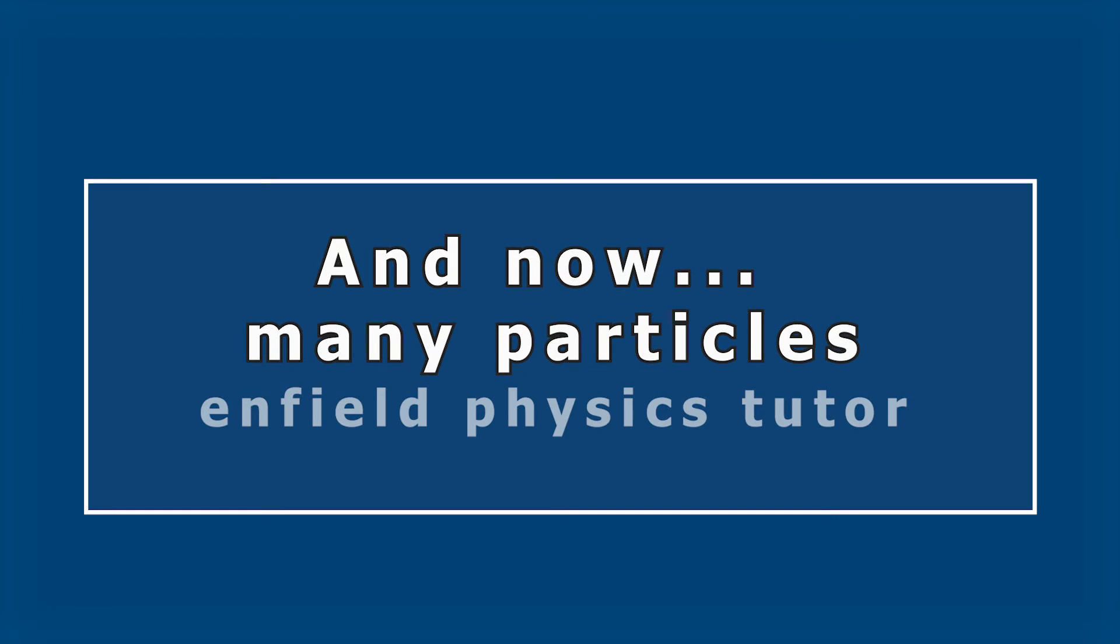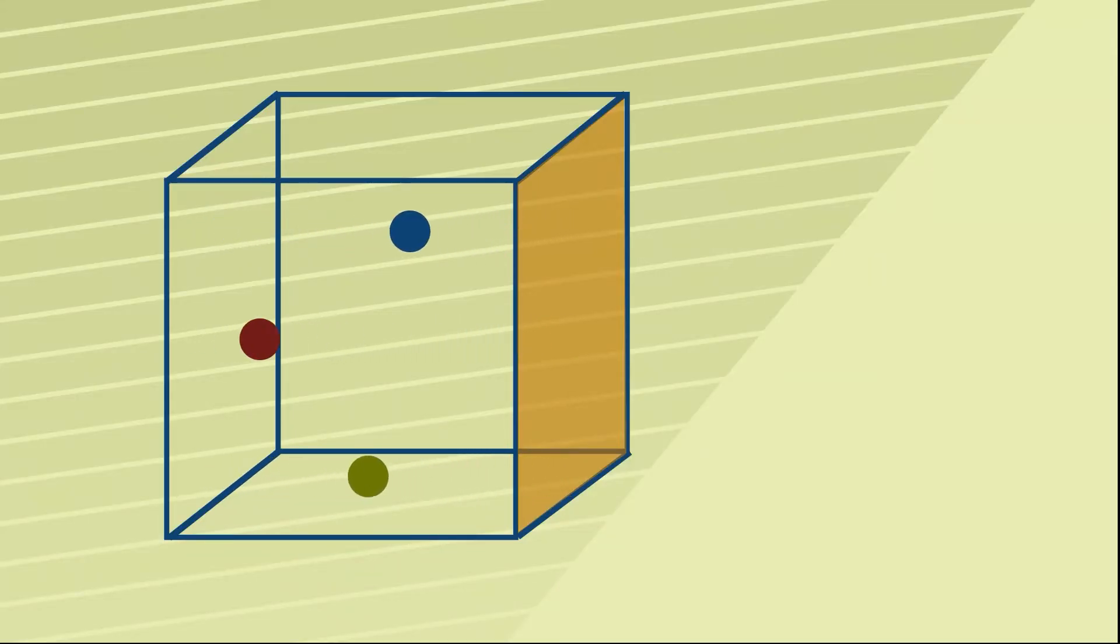So we've worked out a formula to give us the force on the orange wall if we have one particle. Well, we don't have one particle, do we? We have lots, and so we need to generalize.